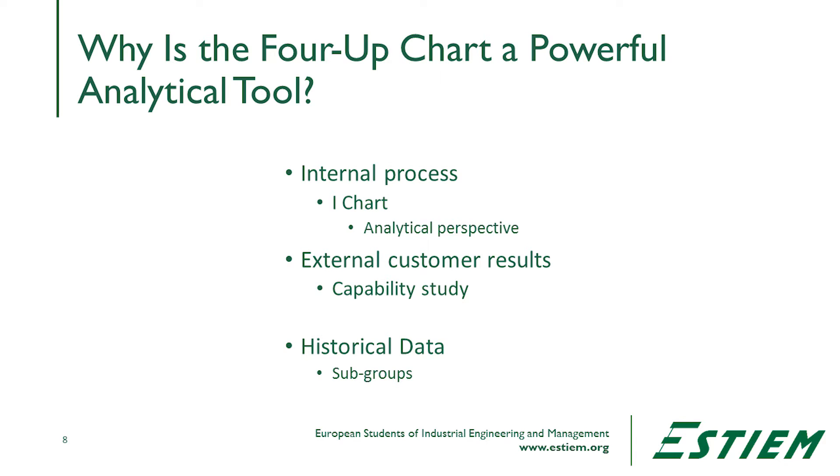We get the analytic perspective from the iChart and the enumerative perspective from the capability study. Not only that, but it decomposes these rational subgroups according to observable categorical information that tells us where to focus in terms of further investigations — we get this from the Pareto chart. And also the temporal sequence of changes that have happened as the process performed, which we can get from the ANOVA.